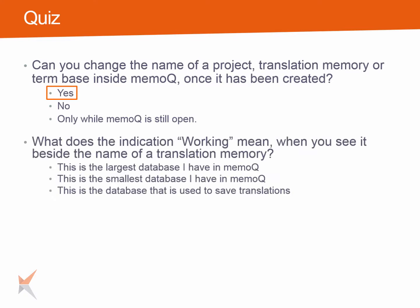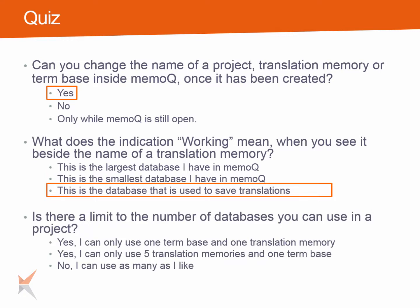Second question: what does the indication primary working mean when you see it beside the name of a term base or translation memory? The correct answer is this is the database that is used to save translations during translation. Third question: is there a limit to the number of databases you can use in a project? The correct answer is no, you can use as many as you like — although in reality you would probably not use more than three or four translation memories and maybe one or two term bases.